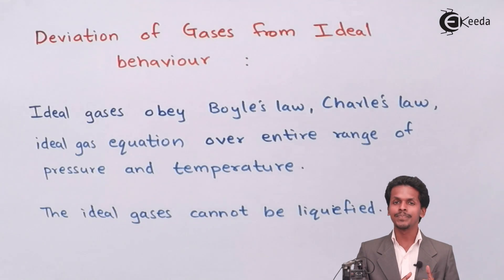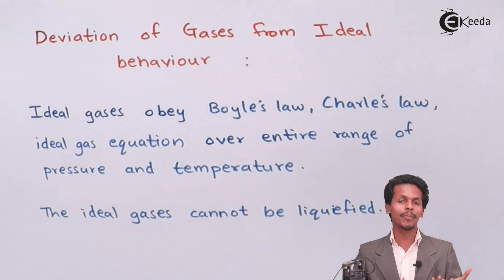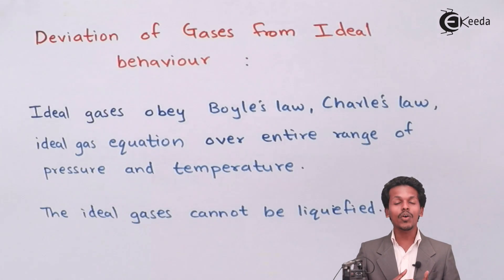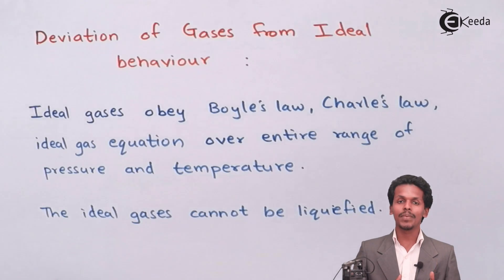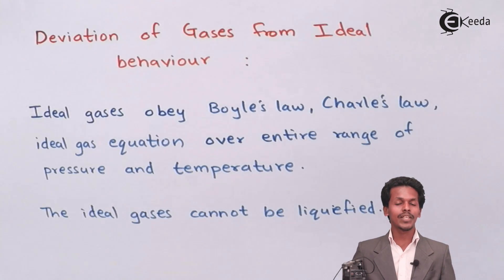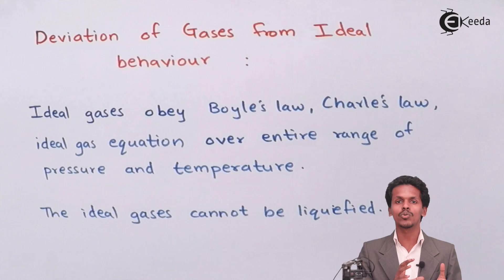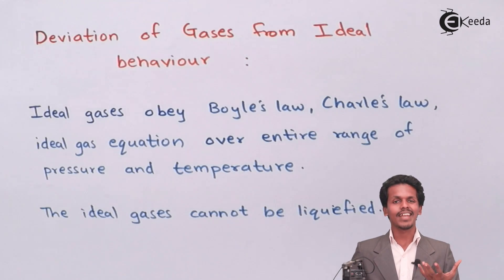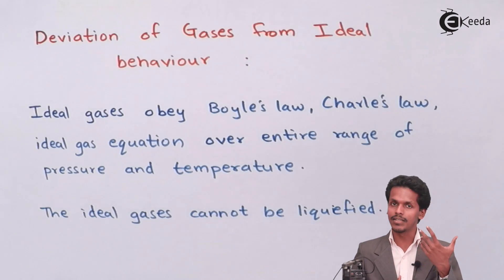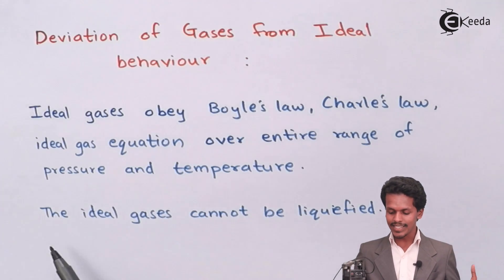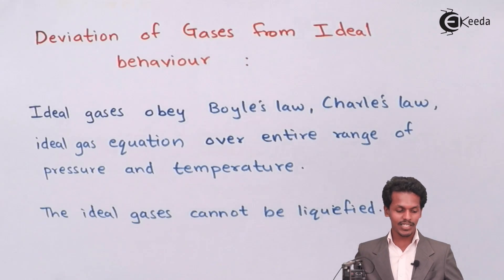But in actual practice, there are no ideal gases available because it is a very theoretical concept. Because the ideal gas equation relates pressure, volume, and temperature, ideal gases have no intermolecular force of attraction. In actual practice, gases can have intermolecular forces of attraction by which the volume can be decreased, and they won't follow the ideal gas equation. Therefore, ideal gases cannot be compressed or liquefied.